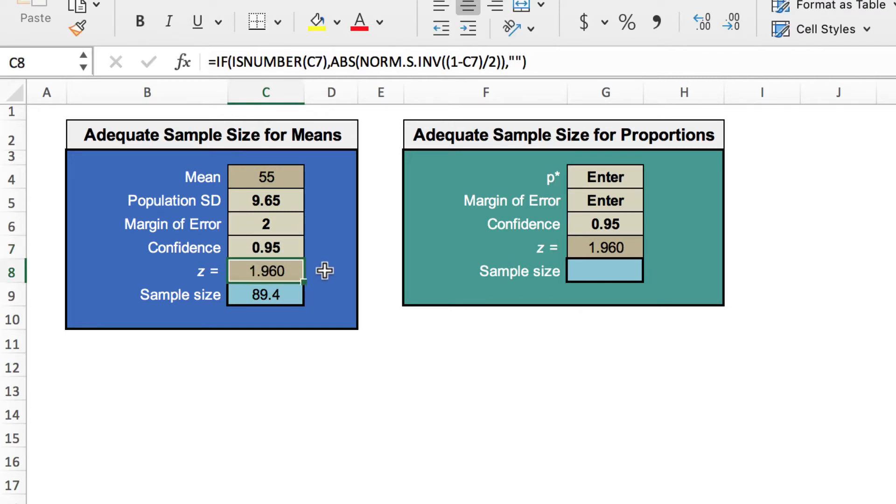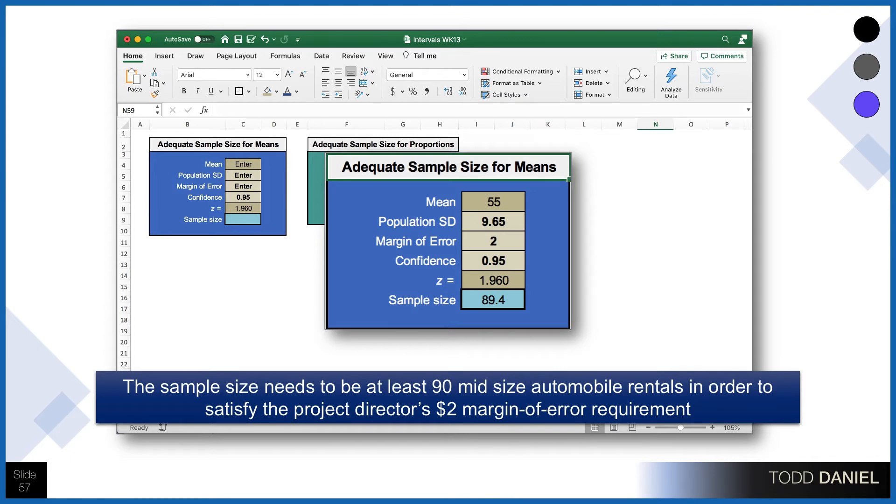Giving us a sample size of 89.4, we'll want to round that up because .4 of an individual or an automobile just isn't going to work. We're going to need at least 90 mid-size automobile rentals in order to satisfy the project director's $2 margin of error requirement.